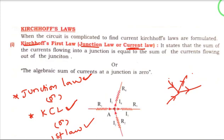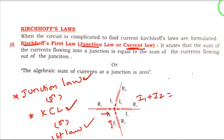So, what we can write for this? The sum of currents entering means: what are the currents entering? I1 and I2 are entering. That is, I1 plus I2 equals what is leaving — I4 current is leaving and I3 current is leaving. So, I1 + I2 = I3 + I4.